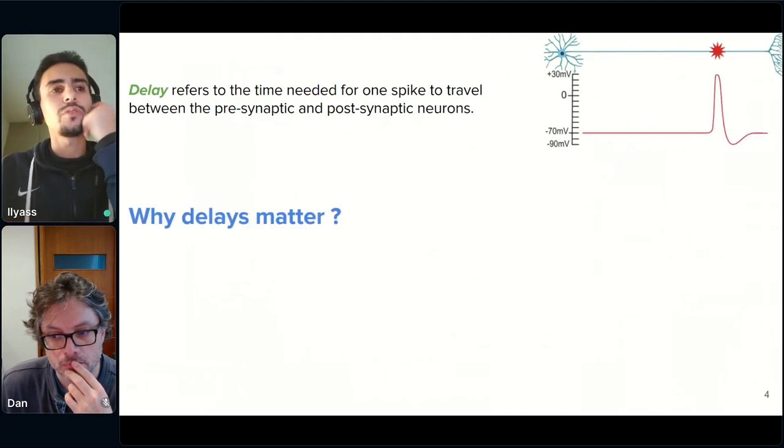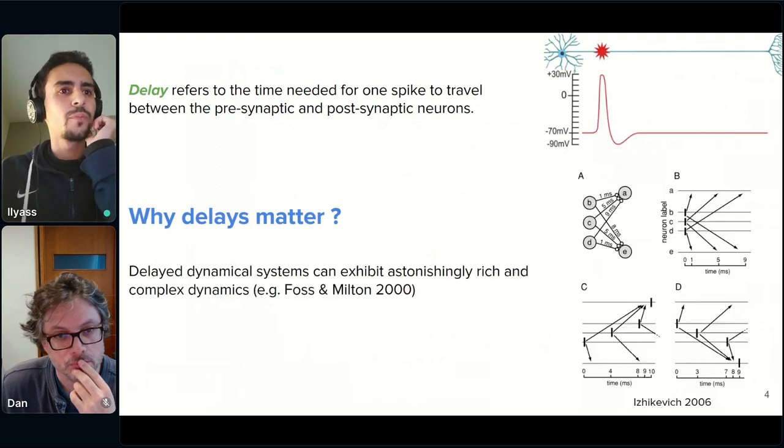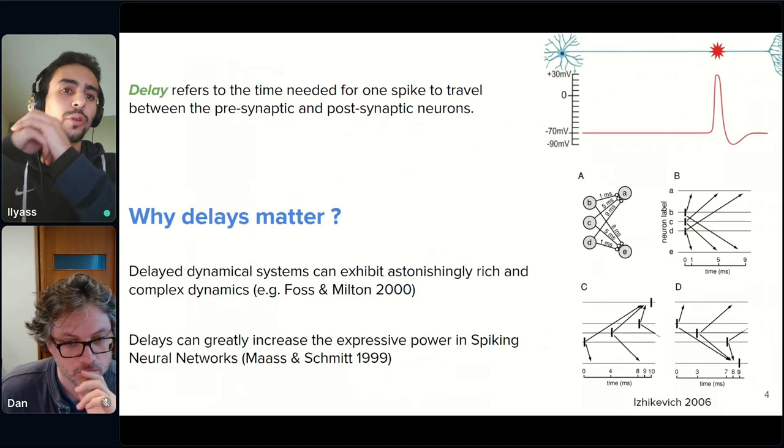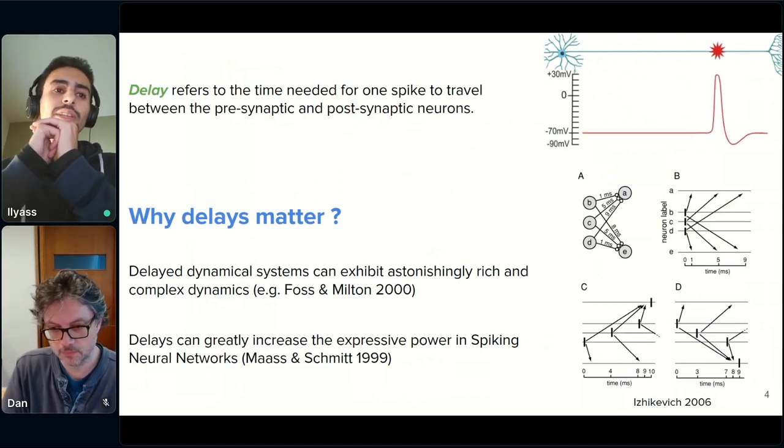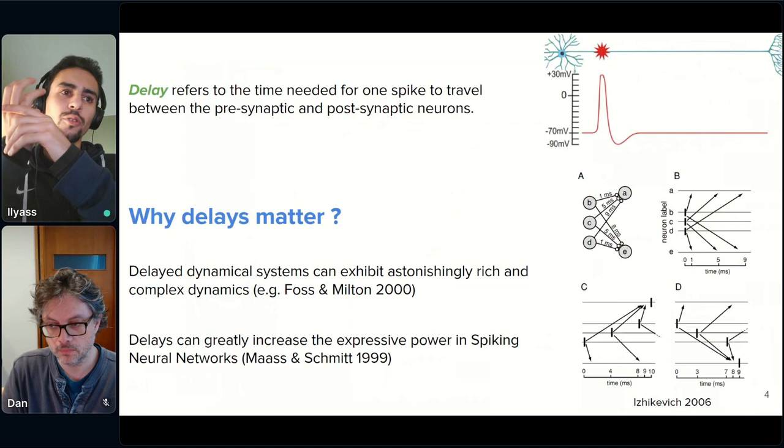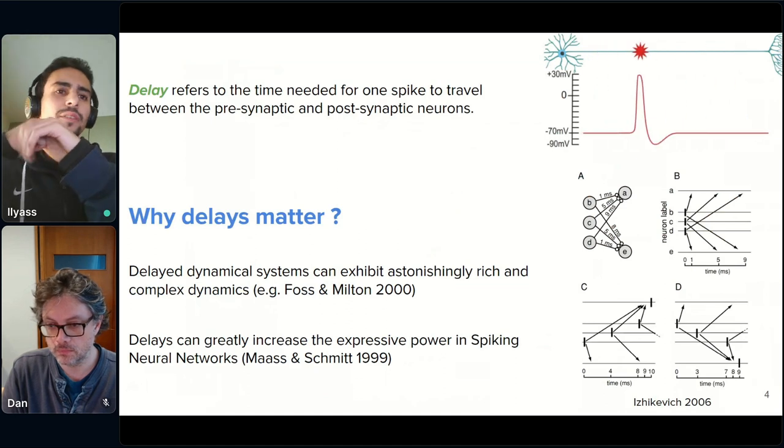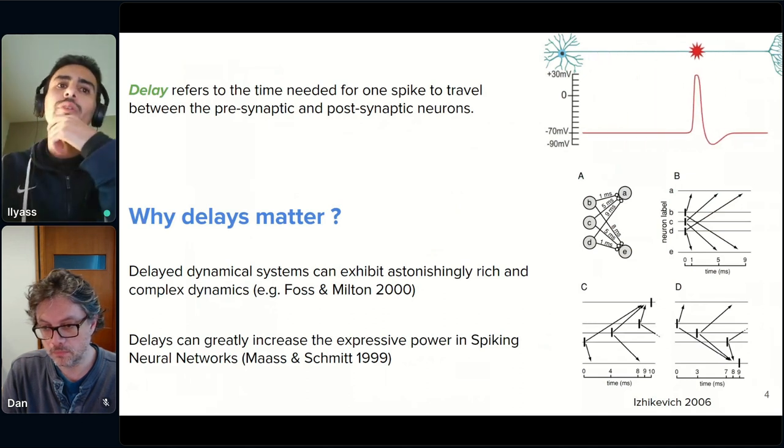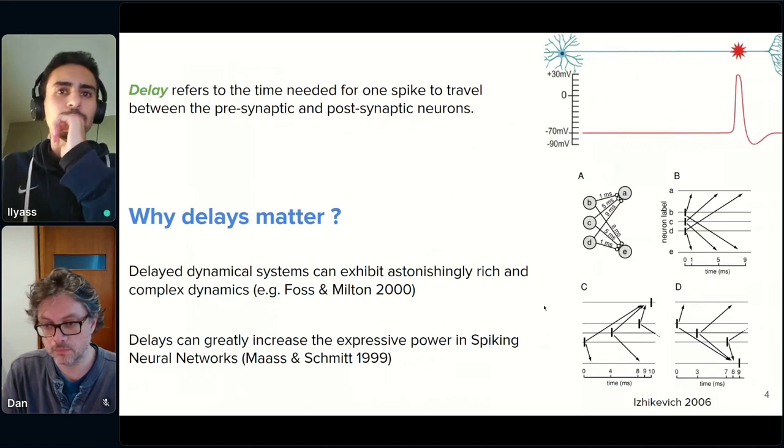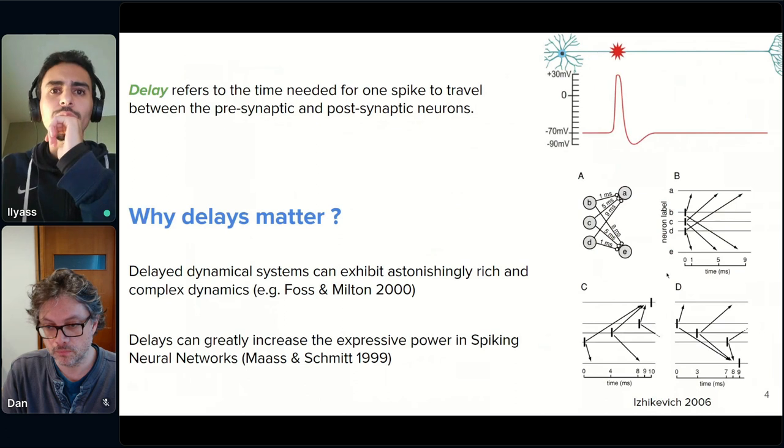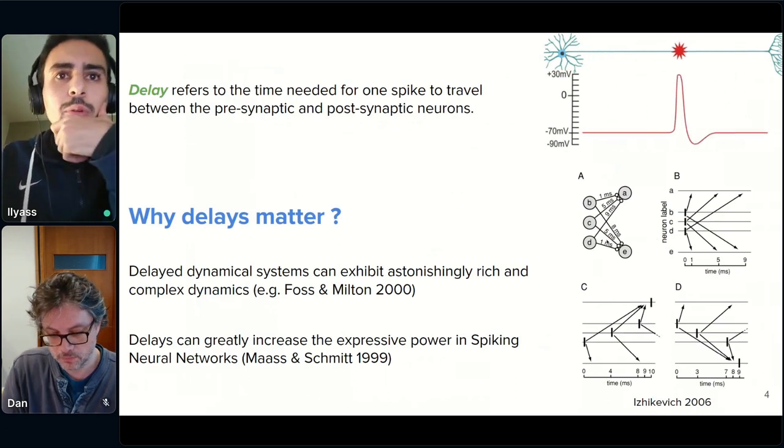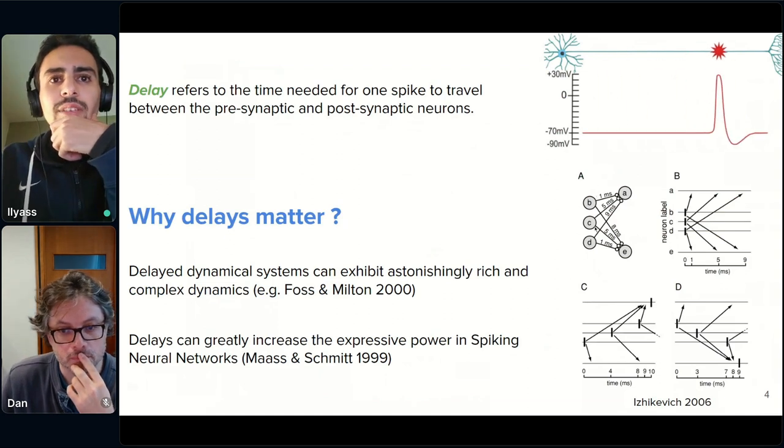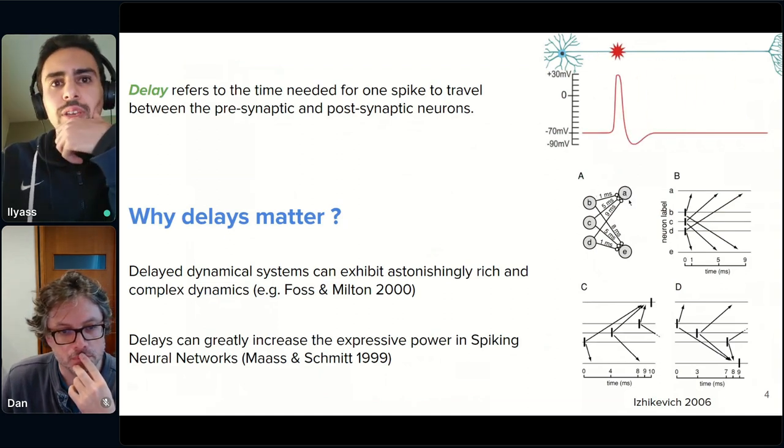So, why are delays important? Why do they matter? In fact, there is a lot of previous theoretical works that showed that delays can greatly increase the expressive power in spiking neural networks. And this is basically by allowing the network to detect some complex spatiotemporal patterns. So, if we can look in the figure in the right, there is an example. We have a simple network here with three input neurons, B, C, and D, and two output neurons, A and E.